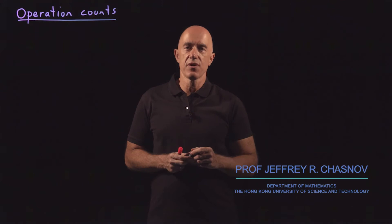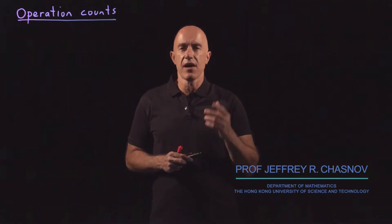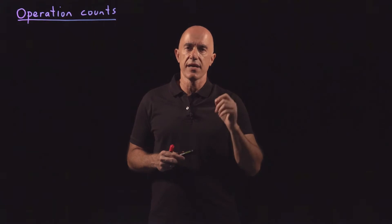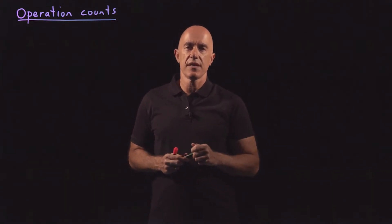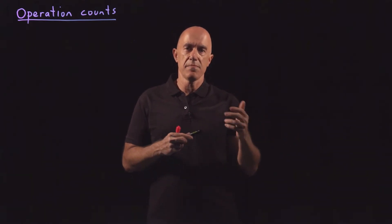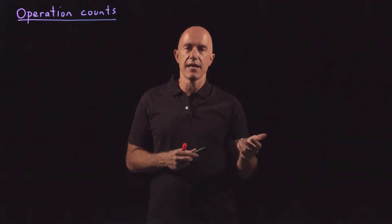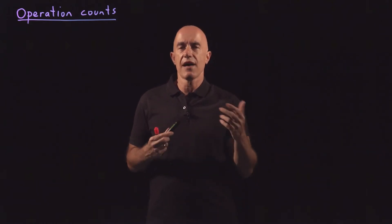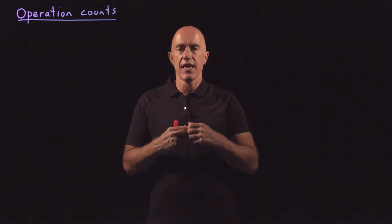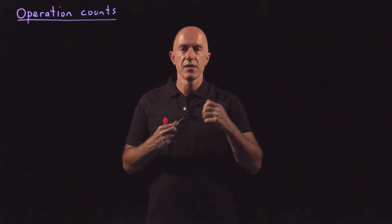In my matrix algebra course, and also in the last video, I made the claim that solving Ax equals b, once A is factored into L times U, is much faster than using full Gaussian elimination. That helps when you're solving a partial differential equation over multiple time steps and the matrix is fixed but the right-hand side keeps changing. You would have a faster algorithm if you first found the LU decomposition of A and then solved LU x equals b as time evolves.